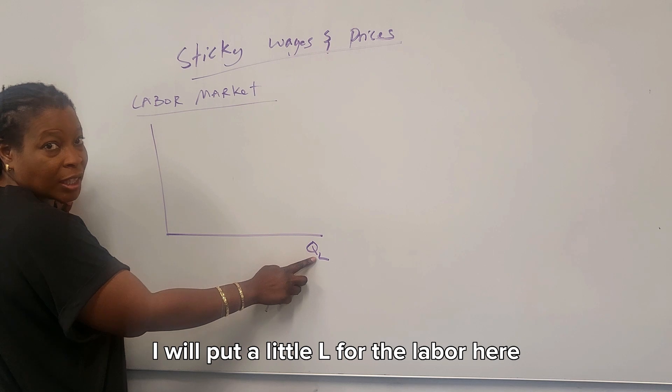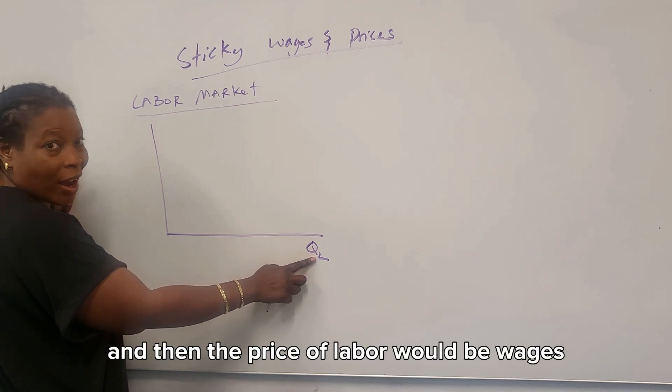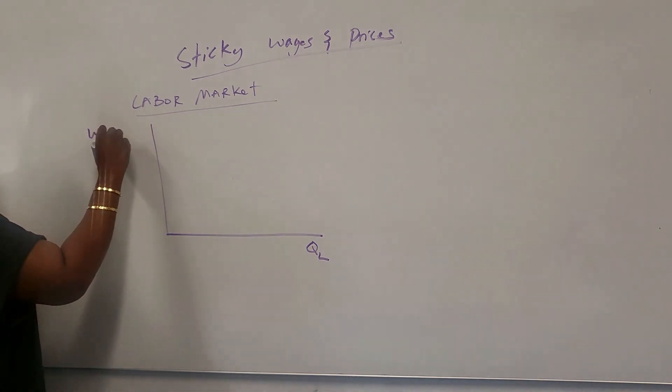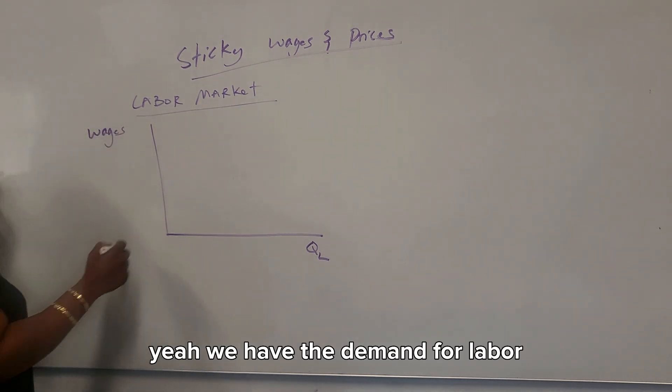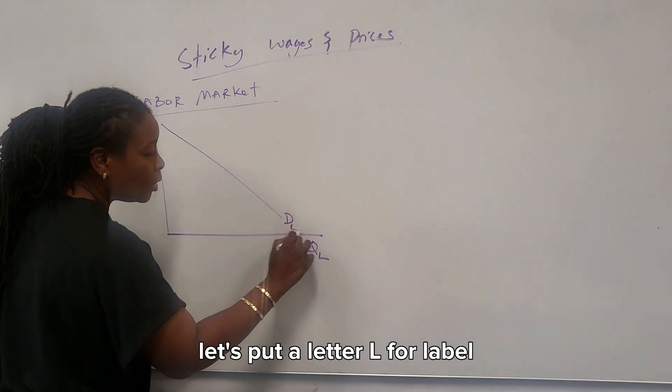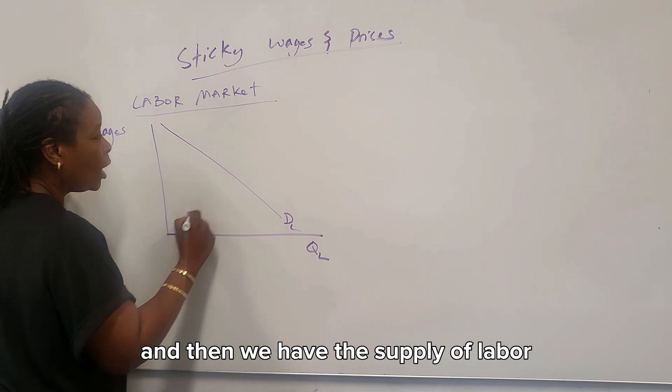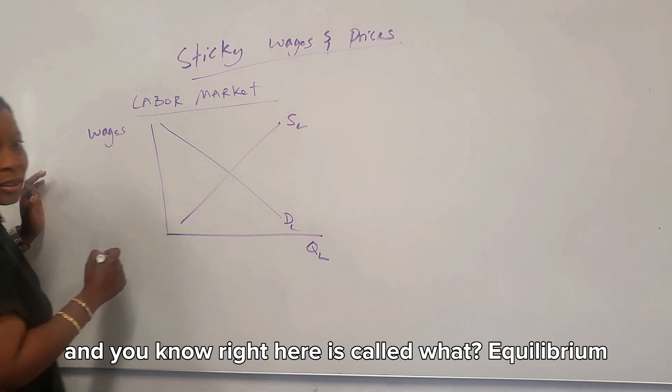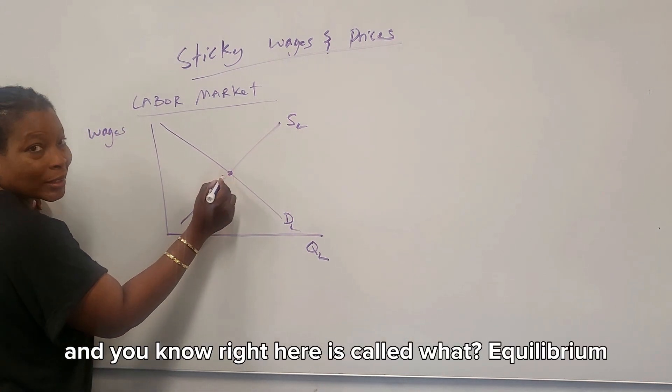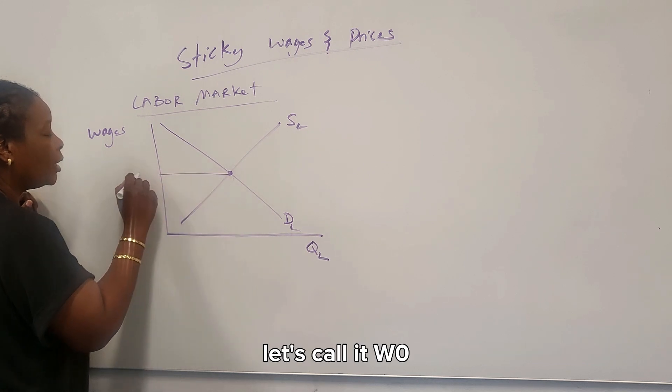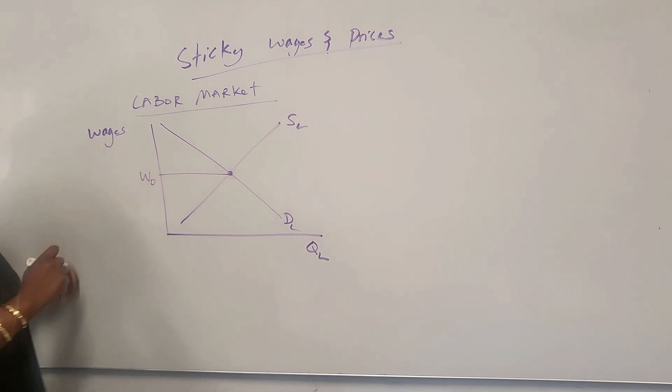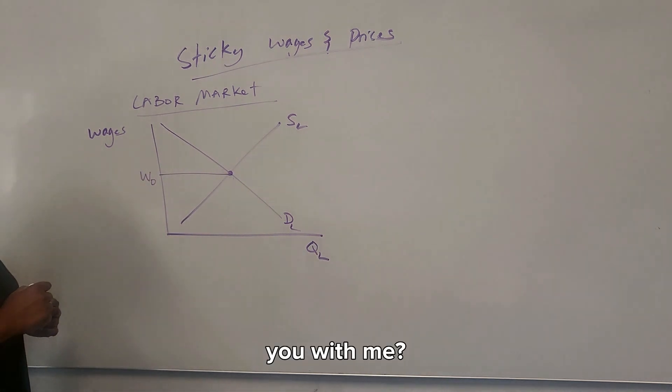I'm going to put a little L for the labor here. And then the price of labor would be wages. We have the demand for labor. Let's put a little L for labor. And then we have the supply of labor. And you know right here it's called equilibrium. Let's call it W0. You with me?